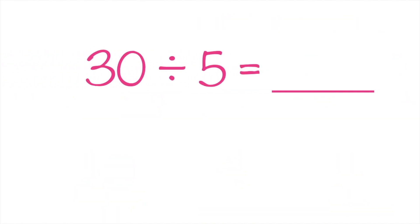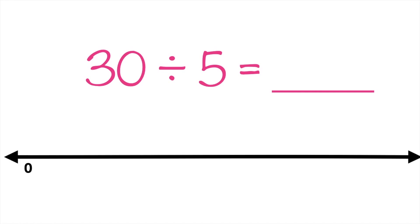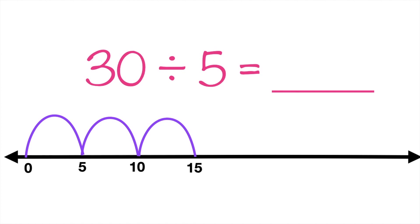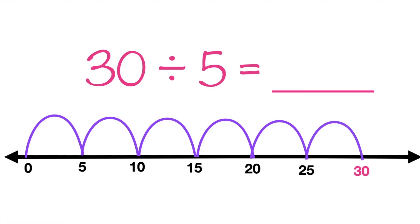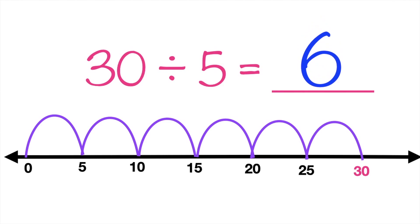Let's have another example. 30 divided by 5 is equal to blank. This time, we're going to use the number line to find the quotient. Here, we're going to skip count by 5 until we reach 30. Are you ready? Let's do it together. 5, 10, 15, 20, 25, 30. Since we reached 30, let's count the number of jumps to find the quotient. How many jumps do we have here? That's correct. It's 6. So, we have 30 divided by 5 equals 6.